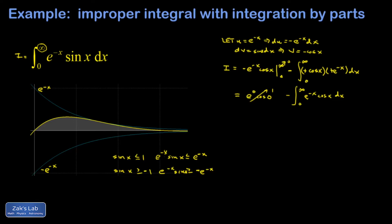But if you let your dv be the same piece it was last time, then a wonderful thing happens - you're going to find another copy of the original integral. I end up with this substitution: let u = e^(-x), so I'm doing the same thing I did before. Then du = -e^(-x) dx. Let dv = cos x dx.